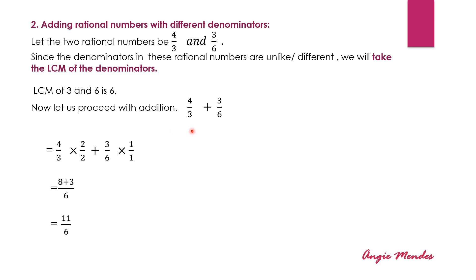The given rational numbers are 4 upon 3 and 3 upon 6. Performing addition on these rational numbers, and since we have taken the LCM, we will write the first rational number, which is 4 upon 3, multiplied by 2 in the numerator and 2 in the denominator. The reason is that we have 3 in the denominator, and since the LCM was 6, we need to multiply 3 by 2 to get 6. Since we have taken 2 in the denominator, we multiply the numerator by the same number as well. Then we add 3 upon 6.